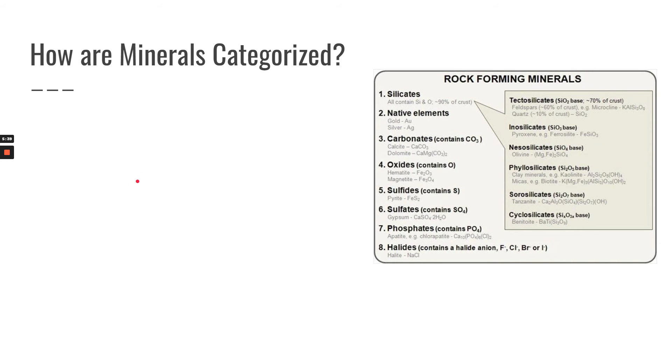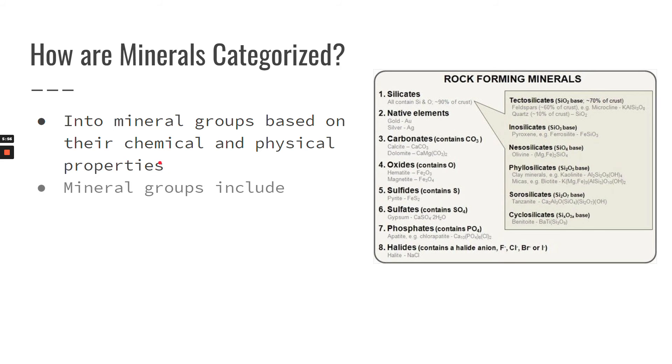Now we're going to talk about how minerals are categorized. So they are categorized into groups based on their chemical and physical properties. Chemical properties are going to be the types of elements that make them up. Physical properties are going to be things that are observable like color and hardness. Some of our mineral groups are silicates, carbonates, sulfides, oxides, sulfates, phosphates, and halides.